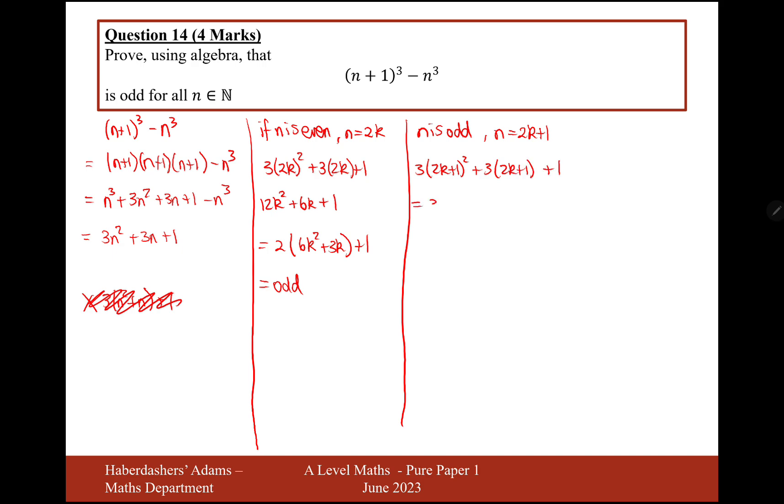Expand your brackets and you're going to get 3 times 4k squared plus 4k plus 1. Add 6k plus 3 plus 1. Expand the brackets even further. 12k squared plus 12k plus 3 plus 6k plus 4. So it starts to now simplify. So 12k squared plus 18k plus 7.